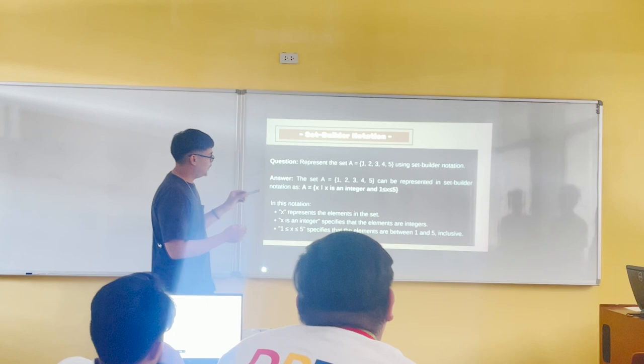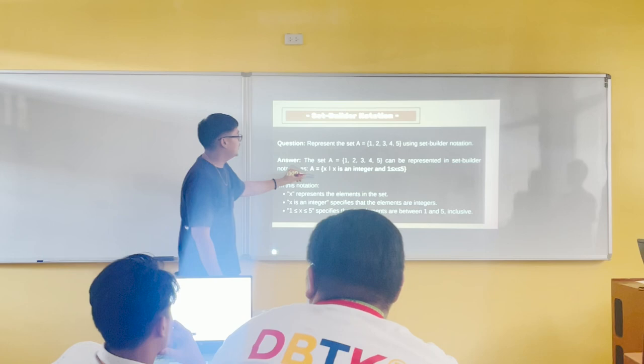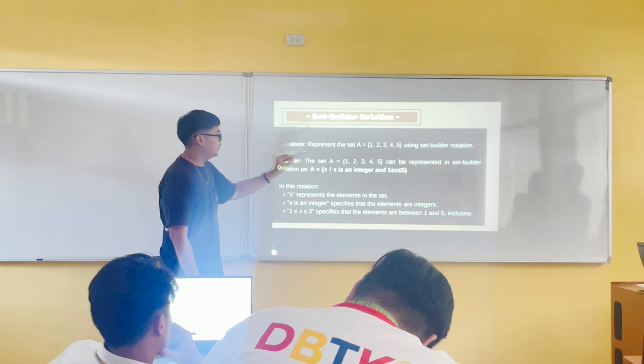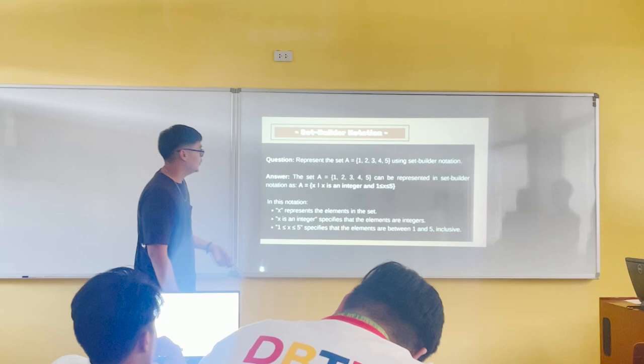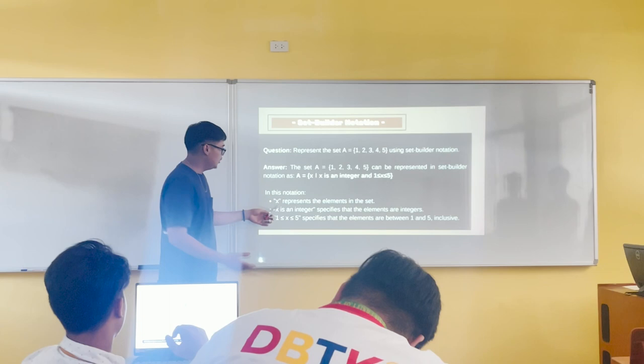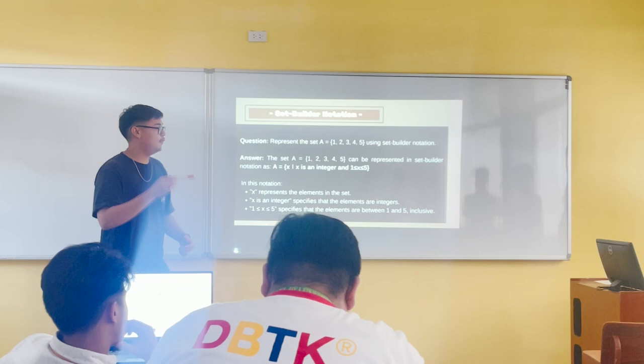A question: represent the set A = {1, 2, 3, 4, 5} using set builder notation. The answer is: set A = {x | x ∈ Z, 1 ≤ x ≤ 5}. Here, x represents the element of the set; x is an integer, which specifies that the elements are integers. And the condition is that the elements are between 1 and 5.